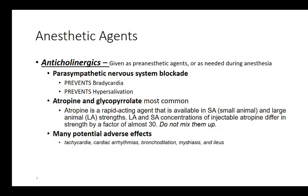Why use an anticholinergic? If you relax too much, your heart rate will slow down, sometimes to a dangerous level. We give anticholinergics to block the parasympathetic nervous system and prevent bradycardia. They also prevent hypersalivation — if you're very sleepy and drooling, you're in rest-and-digest, and salivation is part of digestion. The most common anticholinergics are atropine and glycopyrrolate. Atropine is currently cheaper and more often used in small and large animal practice.